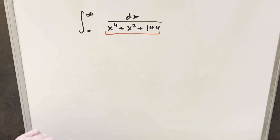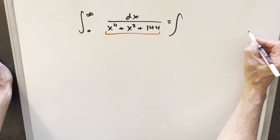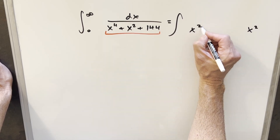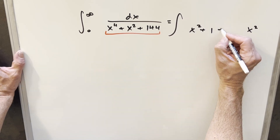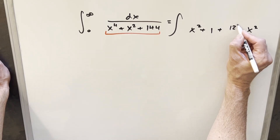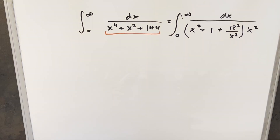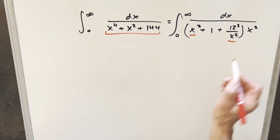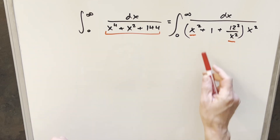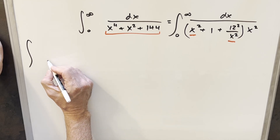What I'm going to do to start is factor out an x squared from this. So when I rewrite it, I'm going to pull an x squared out and then write this denominator as x squared plus 1. And then I'm going to notice that 144 is 12 squared, so I'm going to write this last piece as 12 squared over x squared. Now I want to take those two terms and factor them in a specific way.